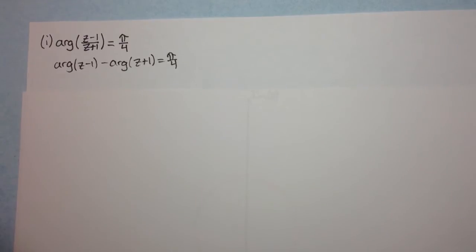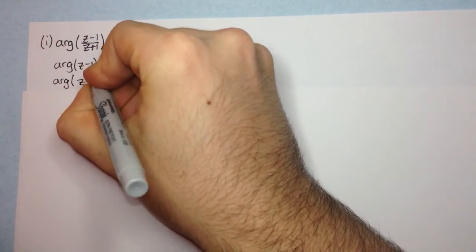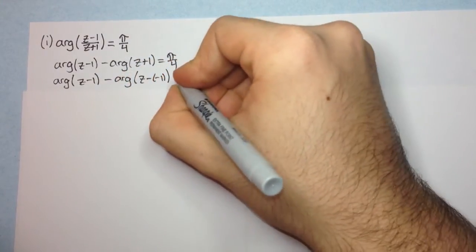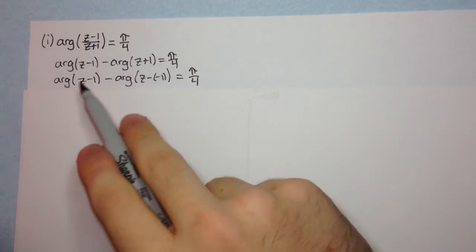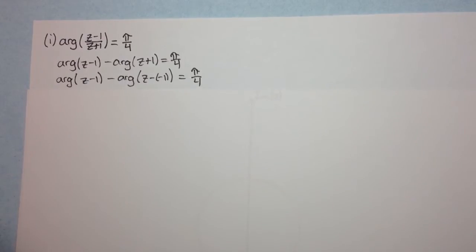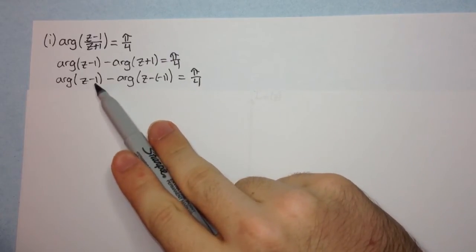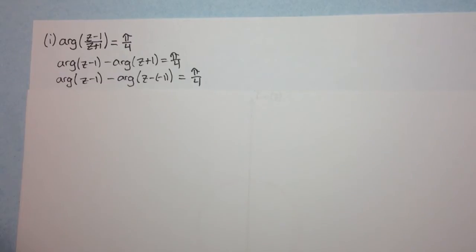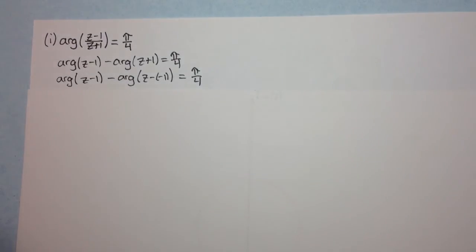There's one more step we can do to make it more clear. We can write this as the argument of z minus 1 minus the argument of z minus negative 1, equal to pi on 4. Now we've written it so we can see explicitly the points we need to focus on. This represents the arc of a circle which starts at the complex number 1 plus 0i and ends at the complex number minus 1 plus 0i. Here our angle is positive, so this arc goes in the anti-clockwise direction.